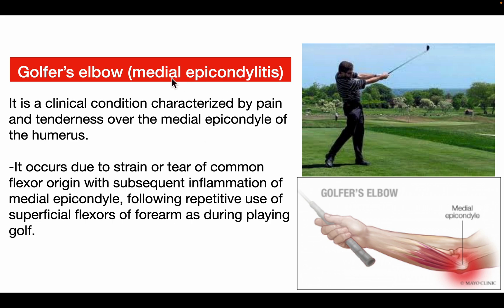Medial epicondylitis, also known as golfer's elbow, is a clinical condition characterized by pain and tenderness over the medial epicondyle of the humerus. It occurs due to strain or tear of the common flexor origin with inflammation of the medial epicondyle, following repetitive use of the superficial flexors of the forearm, as during playing golf.